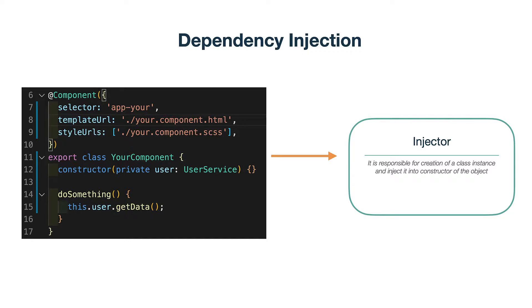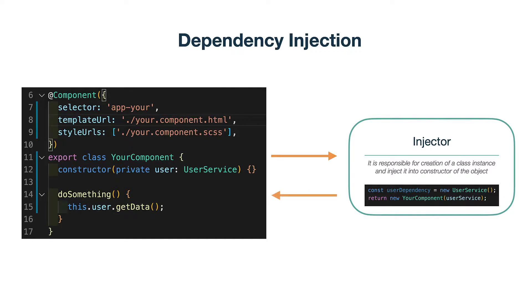So what is an injector? An injector is an object in Angular dependency injection that is responsible for creating objects. If we simplify it as much as possible, the injector will create an instance of our dependency — UserService in our case — and provide it as a constructor parameter for our component. In fact, we can even code a simplified prototype of dependency injection in order to show you that there is no magic behind it.